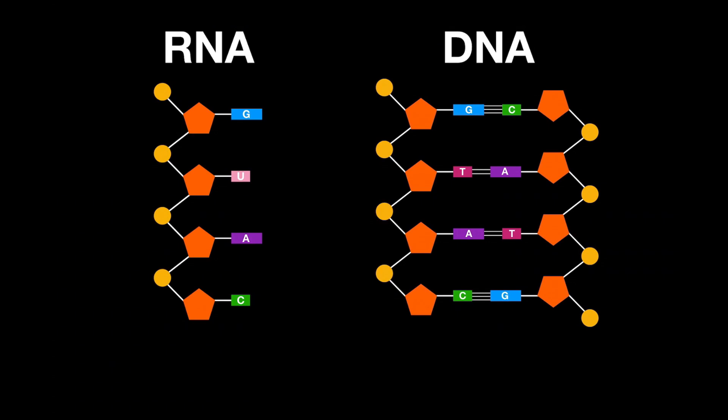Secondly, when you look at the nitrogenous bases found in RNA, you find guanine, cytosine, adenine, and uracil. You do not find thymine.